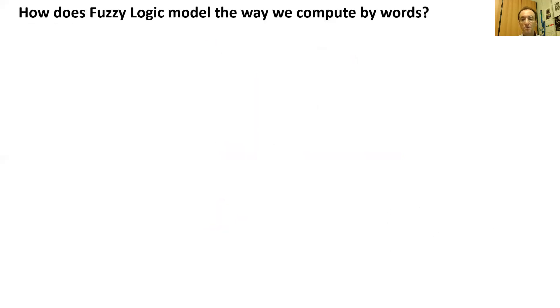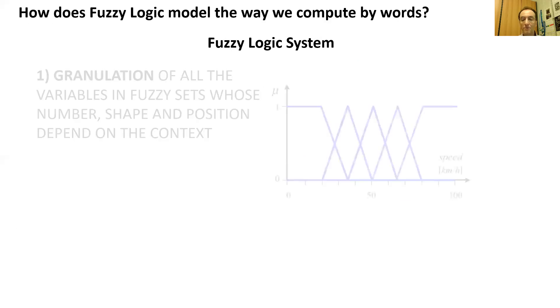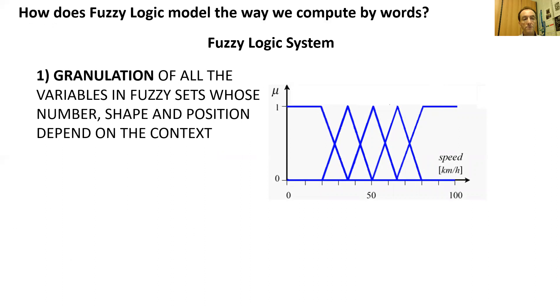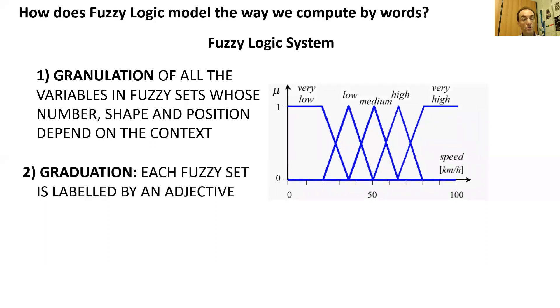How does fuzzy logic model the way we compute with words? In fuzzy logic, any linear cause-and-effect relationship is described by a fuzzy logic system. The construction of a fuzzy logic system requires three fundamental steps. First, the granulation of all the variables in fuzzy sets. The number, position, and shape of the fuzzy sets are context-dependent. Second, the graduation of all the variables. A word, often an adjective, labels every fuzzy set.